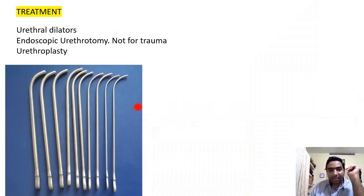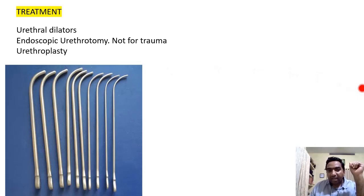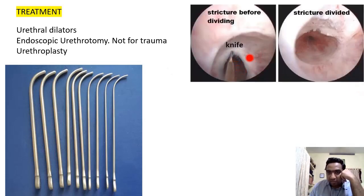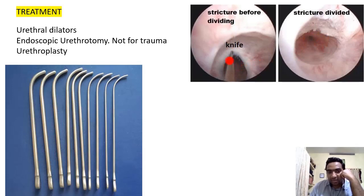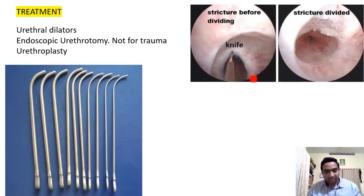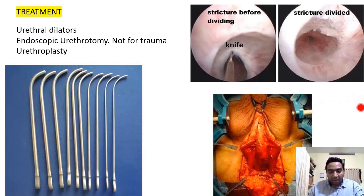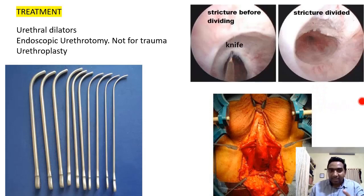Treatment includes urethral dilators — inserted into the urethra, with the curve accommodating the curvature of the bulbar urethra. Next is endoscopic urethrotomy — we cut the walls of the stricture to enlarge the urethra. However, this is generally not done for traumatic urethral strictures, as we may not know the extent of disruption. Finally, urethroplasty — we dissect out the urethra, identify the point of stricture, excise it, mobilize the remaining urethra, and anastomose it together.